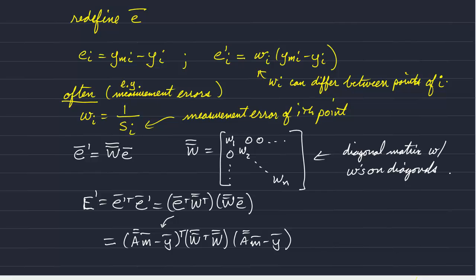And remember, to minimize this, we take the derivative of E with respect to each of our model values. So this gives a vector of derivatives of our misfits with respect to each model parameter.